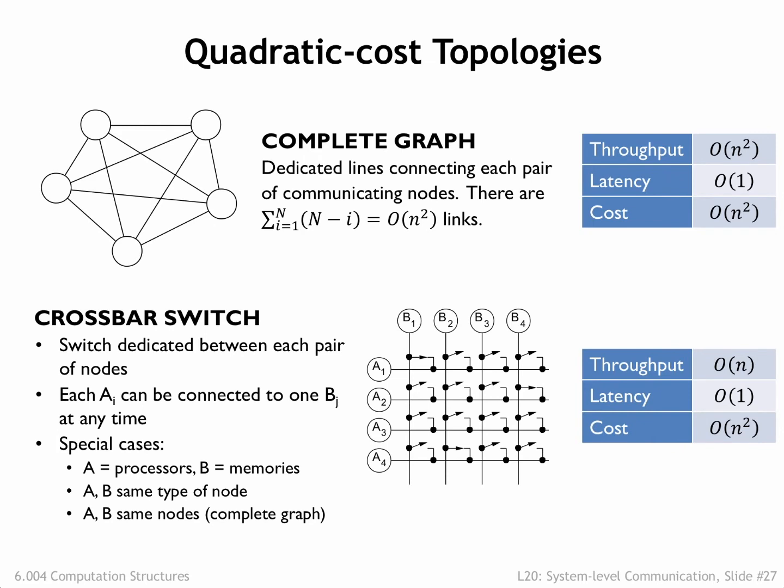A variant of the complete graph is the crossbar switch, where a particular row and column can be connected to form a link between particular A and B components, with the restriction that each row and each column can only carry one message per time unit. Assuming the first row and first column connect to the same component and so on, the crossbar connects n components, delivering order n messages per time unit with a latency of 1. There are n-squared switches in the crossbar, so the cost is order n-squared, even though there are only order n links.